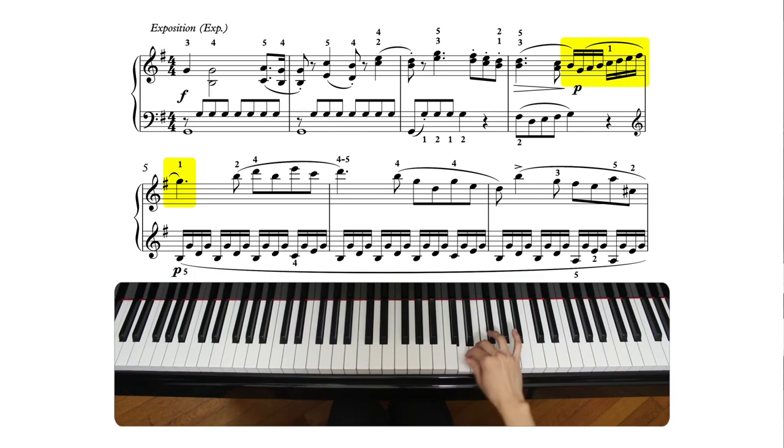In measure 8, keep the wrist flexible. Play the passage slowly once to figure out the necessary motions to successfully play this passage, which involves a lot of circles under and over motions.